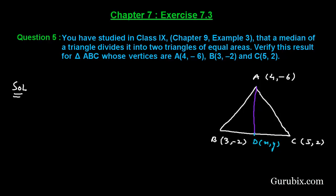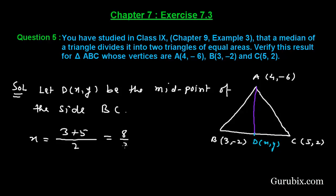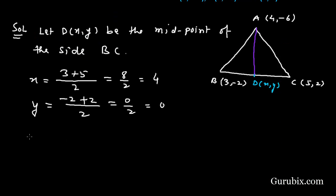First of all, we shall find the coordinates of point D. Let D(x, y) be the midpoint of side BC. Therefore, the x-coordinate of D will be (3 + 5) / 2, which is 8/2 = 4. The y-coordinate will be (-2 + 2) / 2, which is 0/2 = 0. Therefore, the coordinates of D are (4, 0).